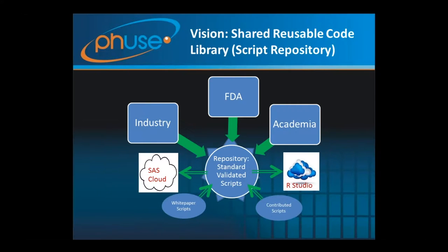The vision for the script repository is a place where people can share code, everyone contributes to it and benefits from it. The short-term goal is to create scripts associated with white papers outlining best practices for tables, figures, and listings, and include that code in the repository. We're also working with the FDA to receive scripts from their JumpStart program to add to the repository, though the vision for the repository is quite broad beyond these near-term goals.